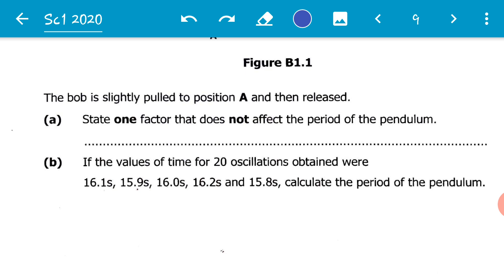One of the factors that affects the period of a pendulum is the length of the pendulum. The second one is the acceleration due to gravity. So these two factors — the length of the pendulum and the acceleration due to gravity — will affect the period of oscillation.